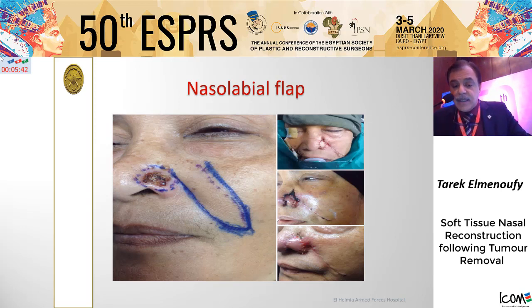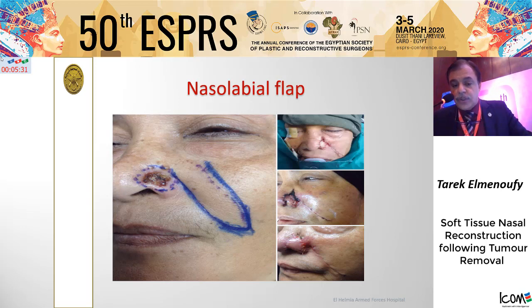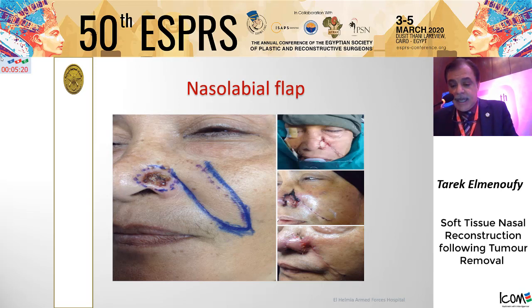In this case, most of the alar was involved by basal cell carcinoma. We chose to reconstruct the whole alar as a unit. We removed the tumor with a good safety margin and elevated the nasolabial flap, folding it upon itself over the cartilaginous support, as seen in the picture at the bottom.